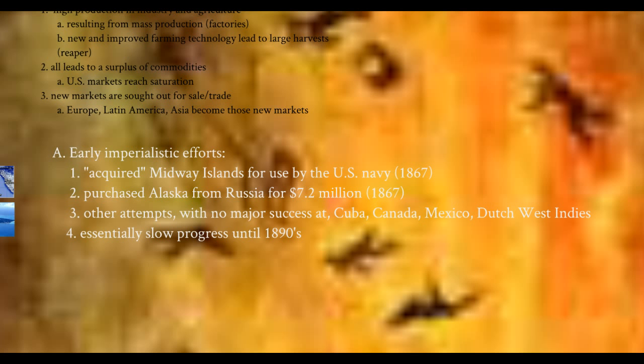We purchased Alaska for $7.2 million in 1867 as well. That did not come easily — there was a lot of protest from citizens, mainly because Reconstruction was going on at the time, and many argued that $7.2 million could do a lot for helping rebuild the South. The country was also divided within political parties on how to reconstruct the South.